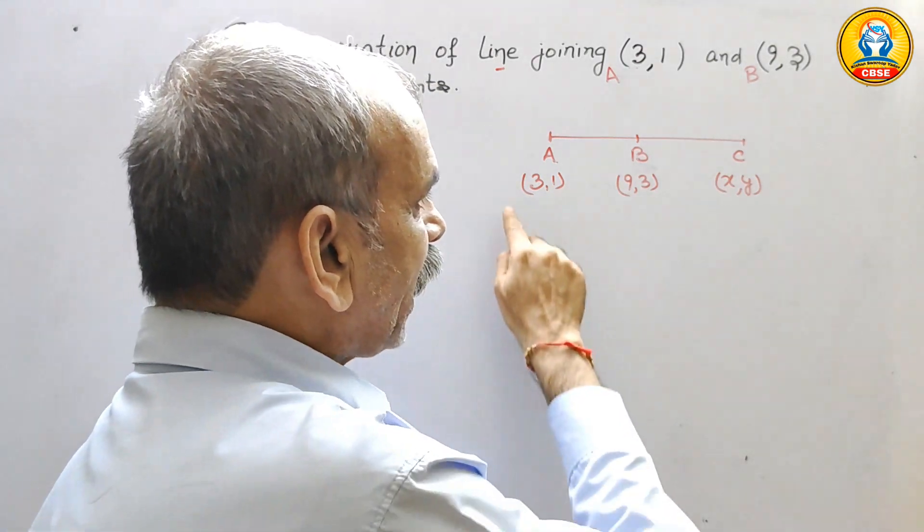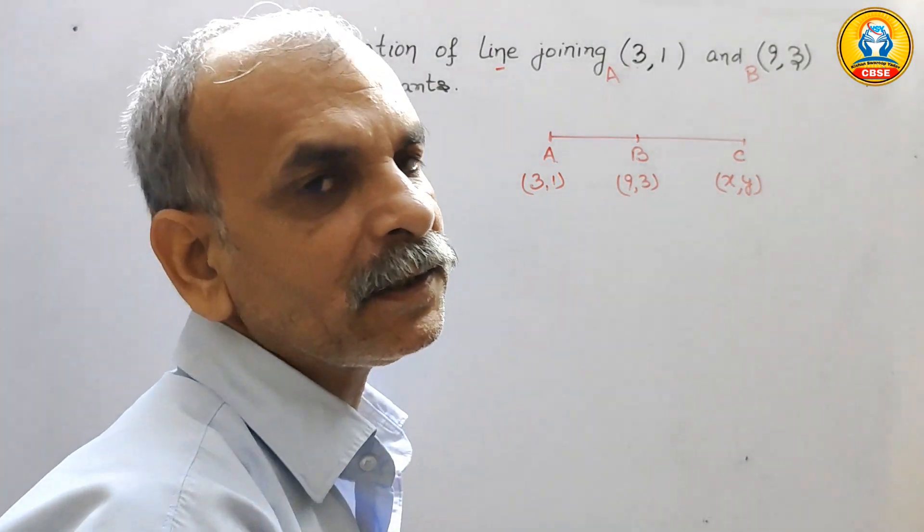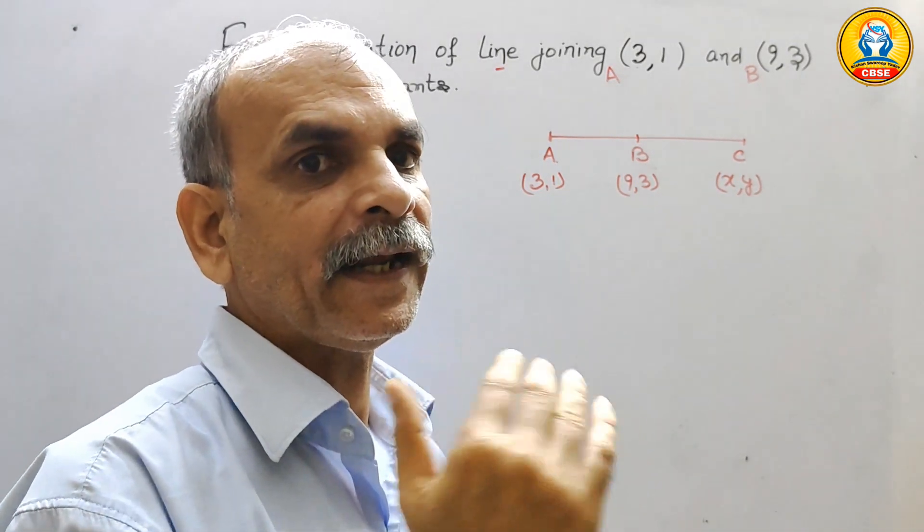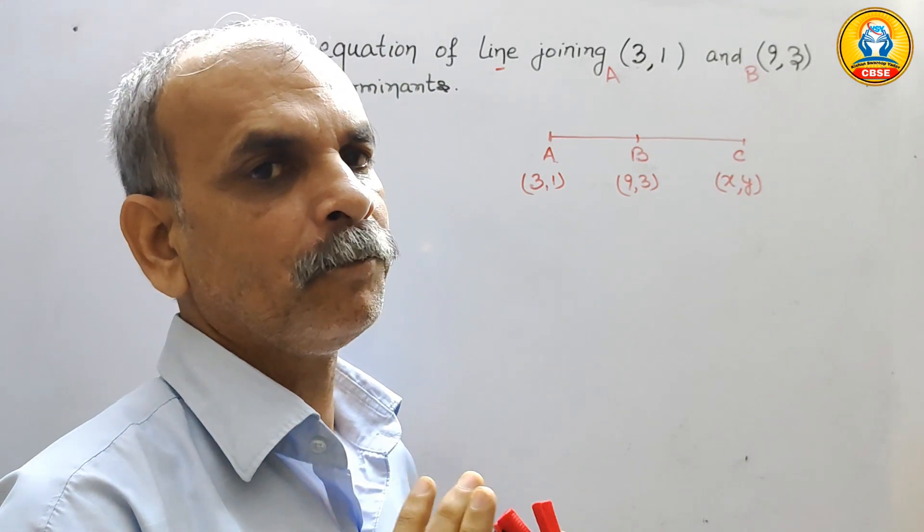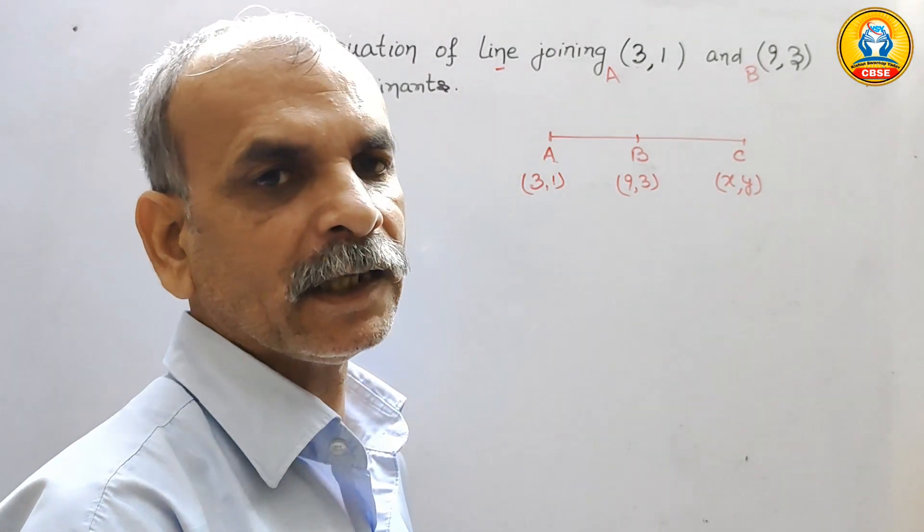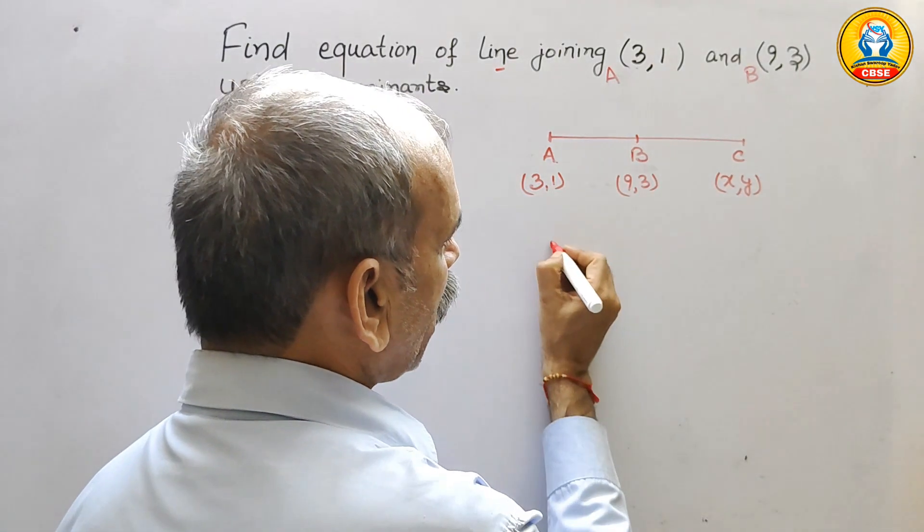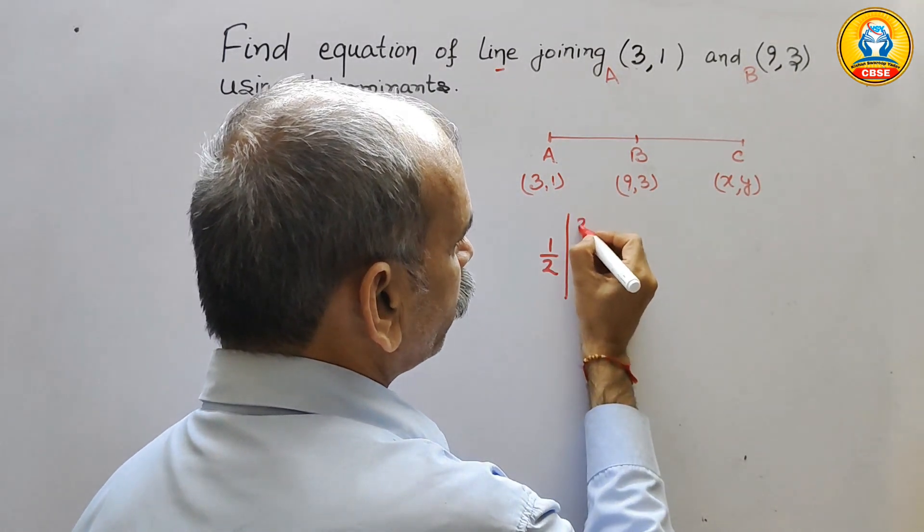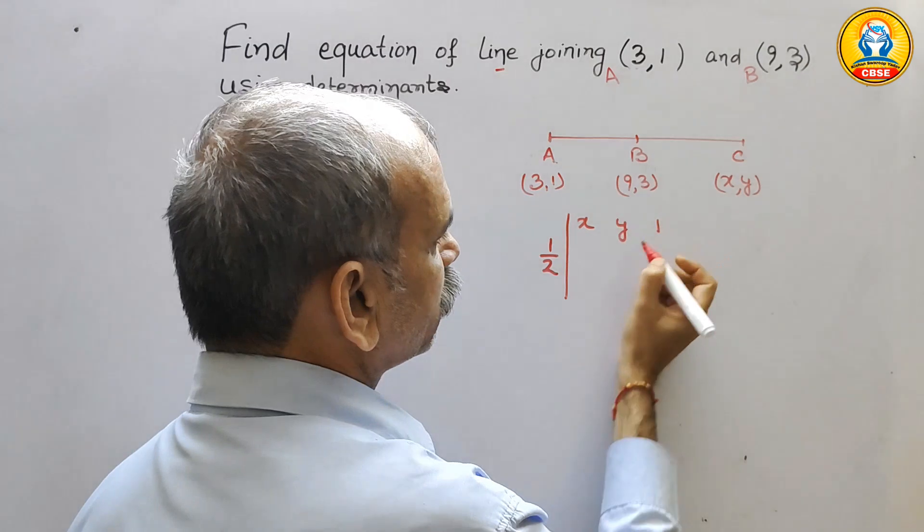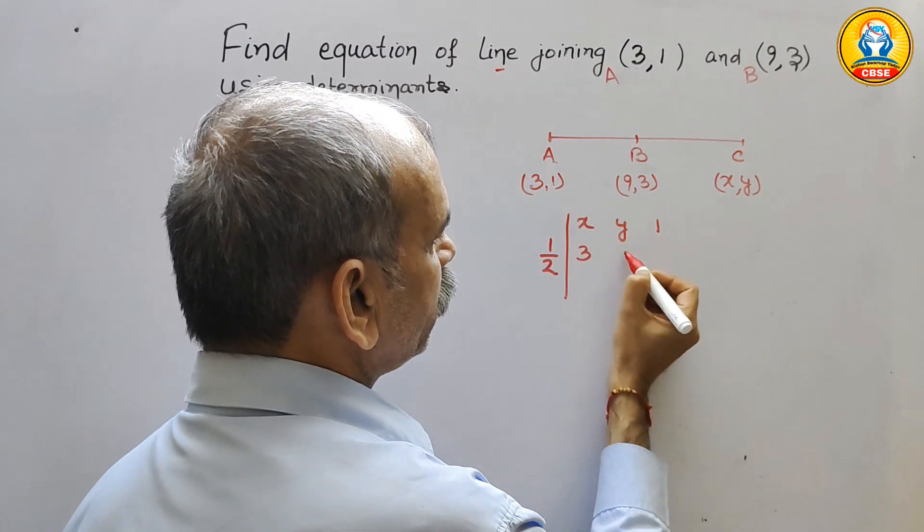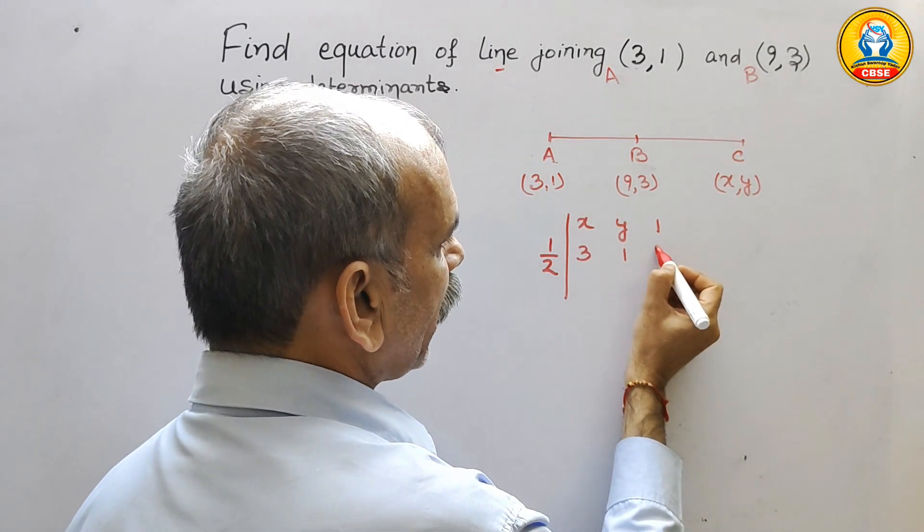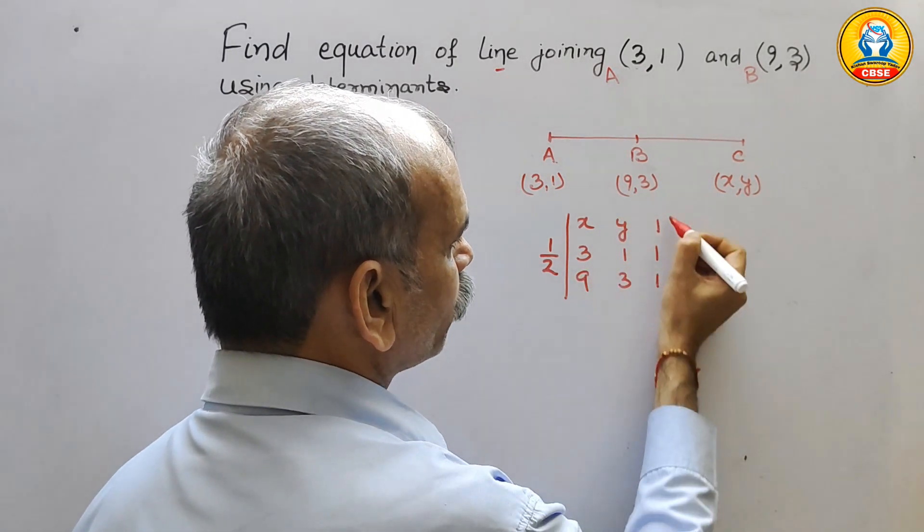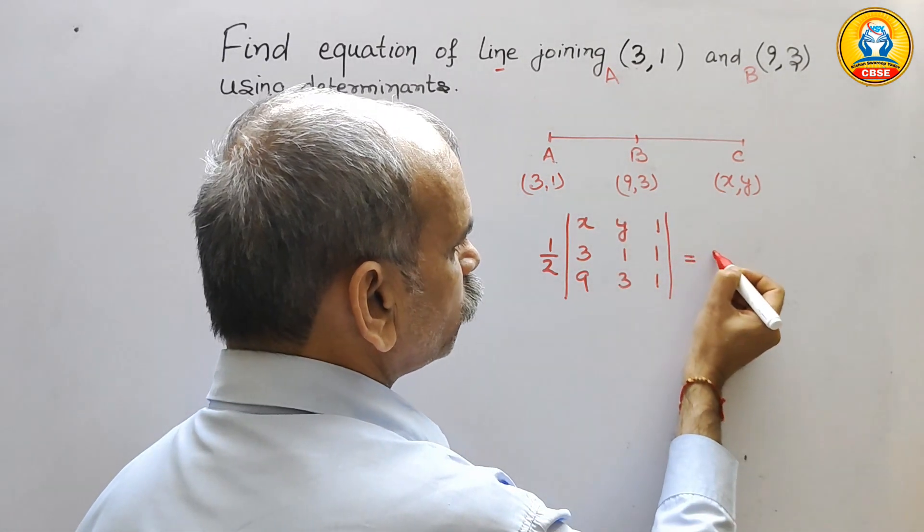So we know that they lie in a straight line, that means the area is 0. So by triangle formula, first we will write the formula for that. So it is nothing but half, determinant of x, y, 1; 3, 1, 1; 9, 3, 1. It should be equal to 0.